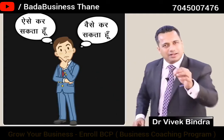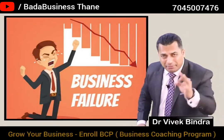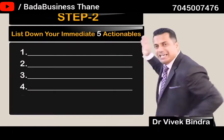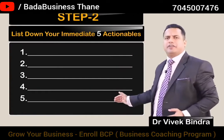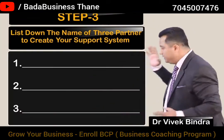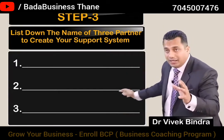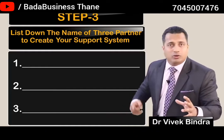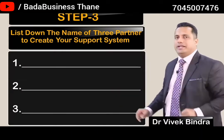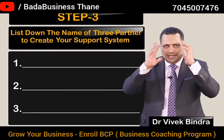The third framework: list down the names of three partners to create your support system. Write the names of three people who will help you. Think — who can help you achieve these possibilities? Design and recruit your support system in advance. List down three names who will actually help you.